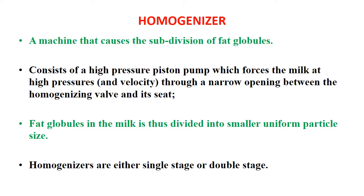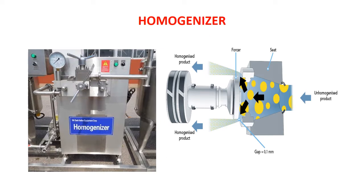Homogenizers are either single stage or double stage. In the left side, there is a machine — a compact design through which the milk passes, and after the necessary treatment, the milk comes out. In the right side design, the mechanism is explained. We can see that from the right side arrow, the unhomogenized milk is going inside and passing through a narrow gap of about 0.1 millimeter. From the left side, there is a forcing device like a piston, and under very high pressure, the milk is passed through. The fat globules are broken and the homogenized milk comes out with fat uniformly distributed.